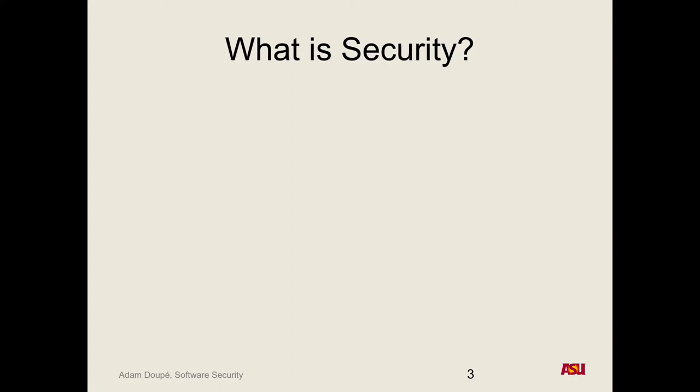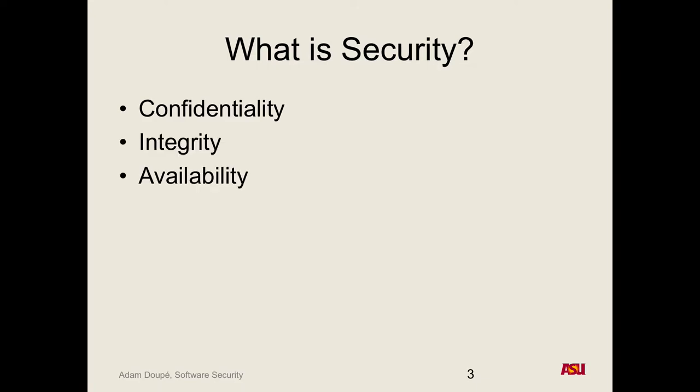Basically, when we think about security we bring it down into three things — this is incredibly important. The acronym CIA is very easy to remember: Confidentiality, Integrity, and Availability. Confidentiality means we want to keep private things private — allow access only to people who should have access, keeping secret things secret. Integrity is what we talked about with modification. If I send my stockbroker a message saying 'buy a thousand shares of Apple' and somebody changes it to 'buy a million shares of Apple' or 'sell all my shares' — that would be bad. I want to make sure the message I sent hasn't been changed in transit.